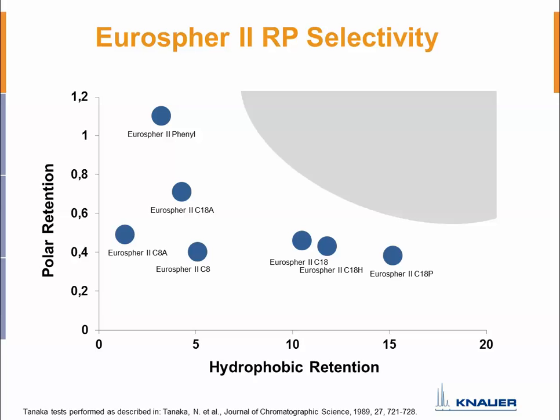Knauer also offers different column brands. To fill any remaining gaps in selectivity, Knauer also offers columns from different manufacturers, which are packed into Knauer hardware in-house, so we can offer a solution for nearly any application.